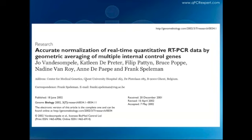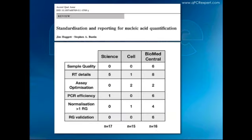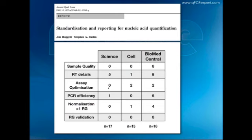Even today, this is not universally practiced. We published a small paper last year looking at papers published in Science in 2010, Cell, and BioMed Central journals, examining quality parameters essential for judging qPCR paper quality. Not a single paper in Science or Cell out of 17 and 15 papers respectively looked at RNA quality. Assay optimization is something people just don't do. Most people don't look at PCR efficiency, and even in BMC journals it's less than 50%. And very few people use more than one reference gene for normalization.